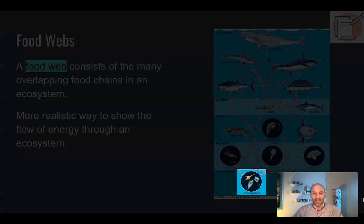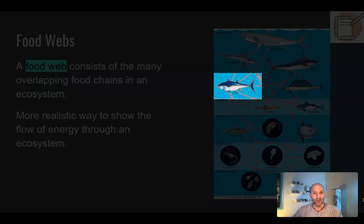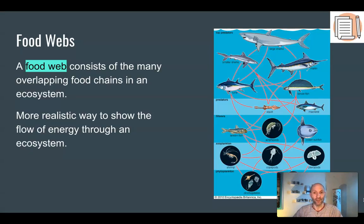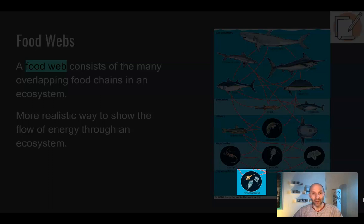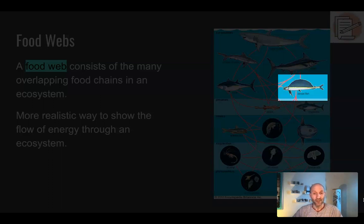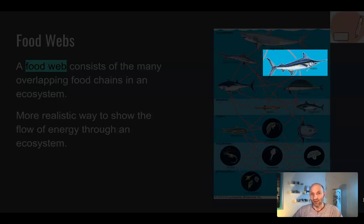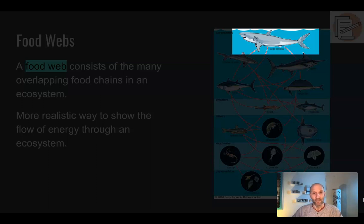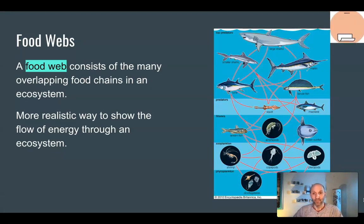For example, if we start with the algae, algae might be eaten by shrimp, the shrimp can be eaten by tuna, and the tuna can be eaten by large sharks — a fairly straightforward food chain. However, in this same ecosystem, there are more complex food chains: the same algae are eaten by shrimp, the shrimp are eaten by copepods, copepods are eaten by amphipods, which are eaten by lancet fish, which are eaten by marlin, which are finally eaten by sharks. When you put all the food chains together, you get a complete picture of the ecosystem that we call a food web.